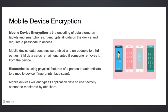Mobile device encryption is the encoding of data stored on tablets and smartphones. It encrypts all the data on the device and requires a passcode to access. Mobile device data becomes scrambled and unreadable to third parties. SIM data cards remain encrypted if someone happens to remove the card from the device.